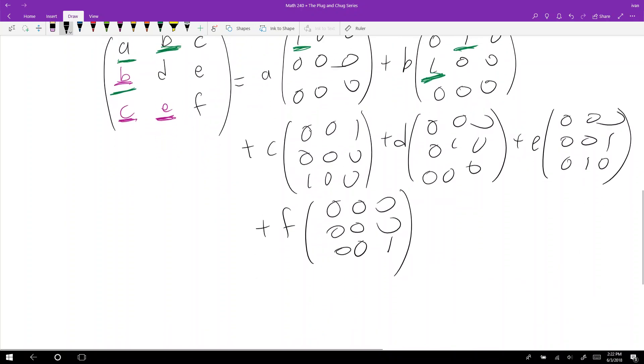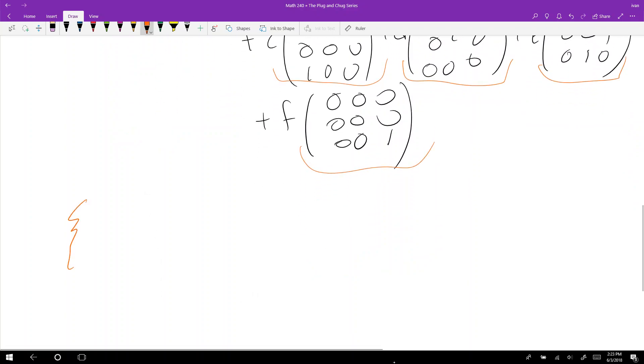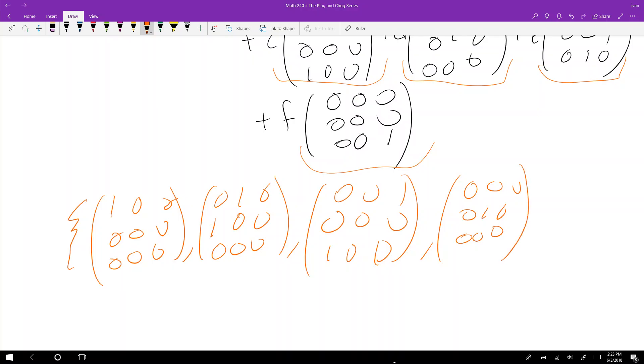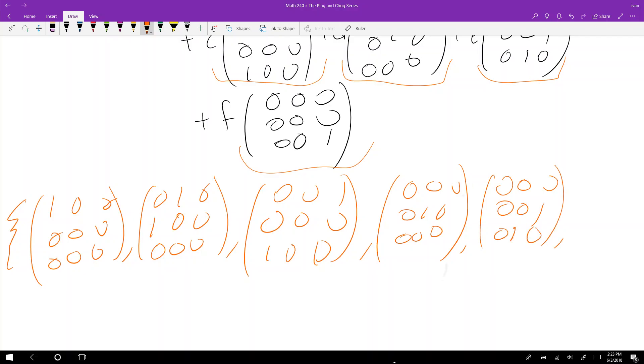And what do I do? Well, now I take these guys, I take each individual matrix, and I put them into a set of matrices. So now consider the set of matrices that is 1-0-0-0-0-0-0-0-0, 0-1-0-1-0-0-0-0-0, and so on.